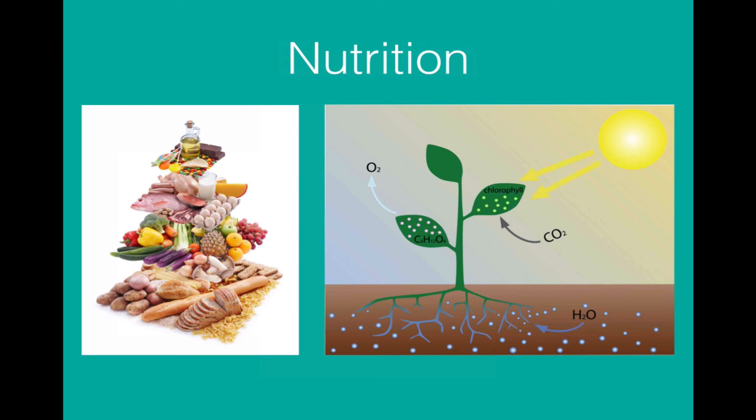Producers use photosynthesis and get minerals from the soil, in the case of plants, or water, in the case of waterborne plants or algae. Consumers like us get them through eating producers and other consumers.